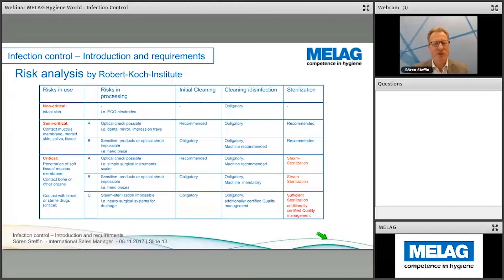Sometimes the instrument manufacturer gives us hints, sometimes not. As the user and owner of a clinic, we have to set up our own rules and define the circle of instrument reprocessing, because the owners of the clinic are legally responsible to their patients. If the manufacturer or anybody else fails, the legal responsibility remains with the owner — the person who does the treatment — who must deal with the consequences.